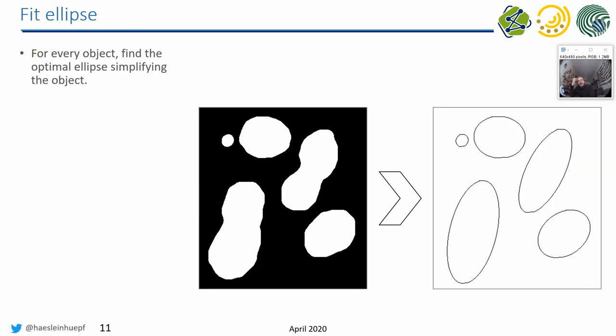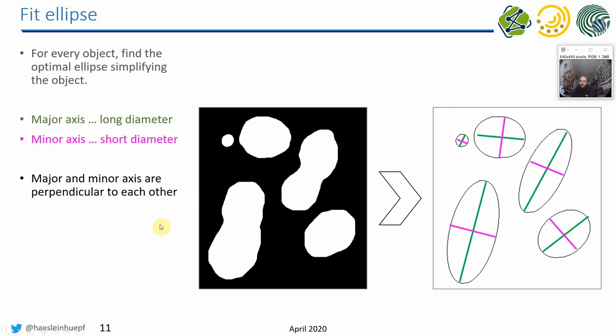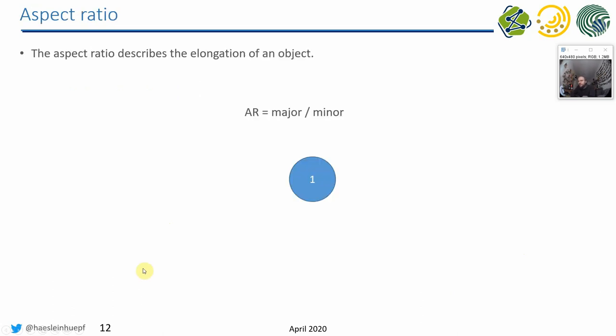There is in ImageJ, but also in other softwares, there is a quite popular technique to measure the shape of objects. So we are now talking about shape descriptors. It's fitting an ellipse. So for every binary object we have in our image, we fit an ellipse to it, which describes it in a kind of optimal way. For example, from such an image, we would fit an ellipse to get this one out, and then we describe the ellipse by their major and by their minor axis. So that's the extension in the two directions. And these are perpendicular to each other, because that's the definition of an ellipse.